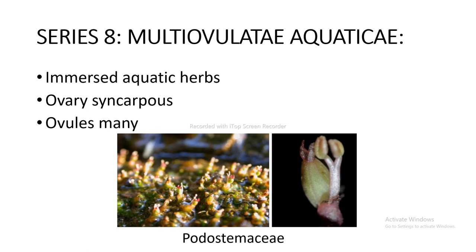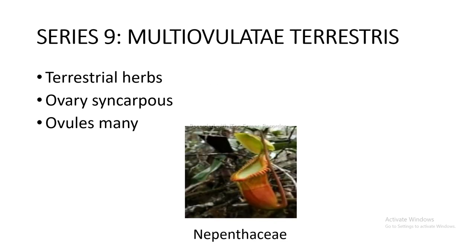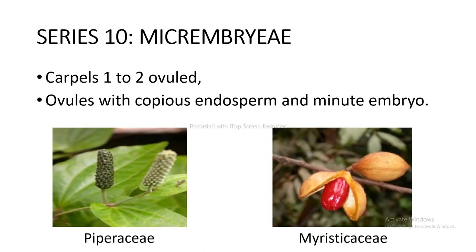Series 8 Multiovulatae Aquaticae: immersed aquatic herbs, ovary syncarpous and ovules many — includes Podostemaceae as shown in the figure. Series 9 Multiovulatae Terrestres: terrestrial herbs, ovary syncarpous, ovules many — includes Nepenthaceae as shown in the figure. Series 10 Microembryae: carpels 1 to 2 ovule, ovules with carpels, endosperm and minute embryo — includes Piperaceae and Aristolochiaceae as shown in the figure.